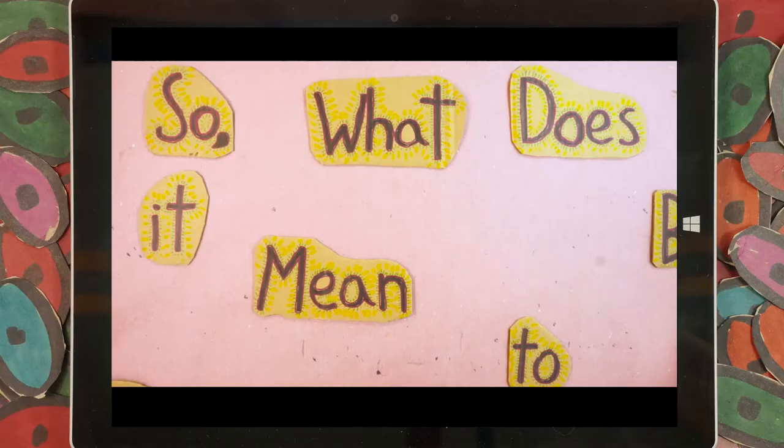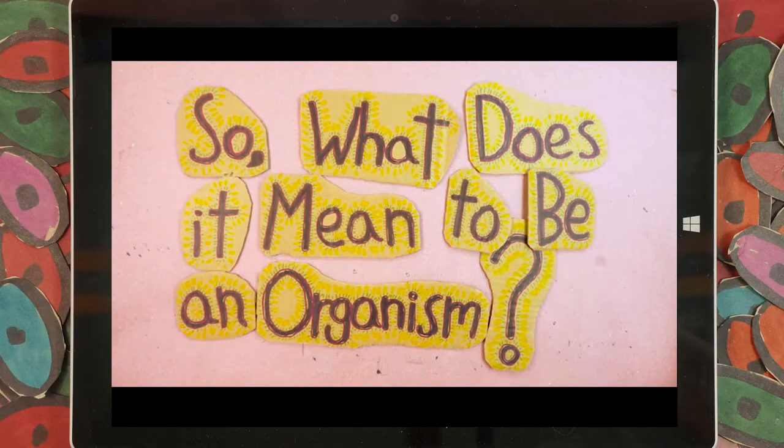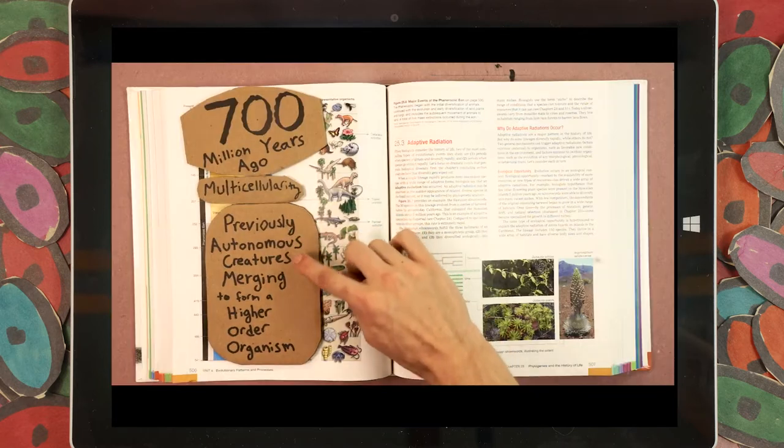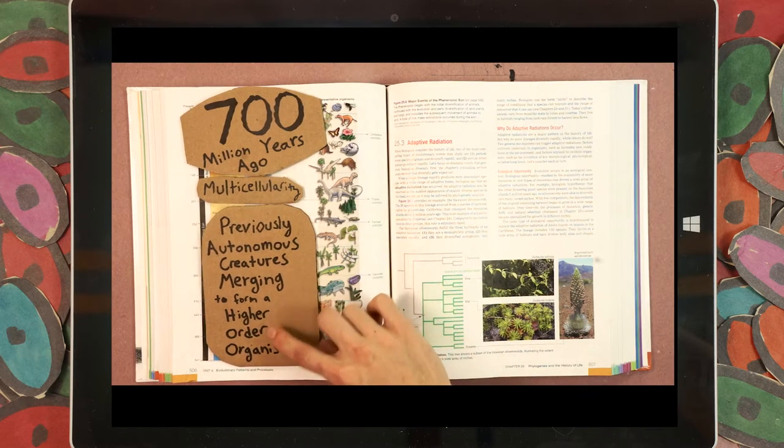And during this season, we focused a lot on questions of biological individuality. What does it mean to be an organism? What is selfishness, previously autonomous creatures merging to form a higher-order organism?